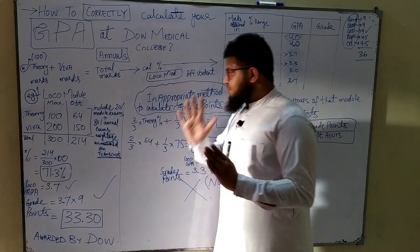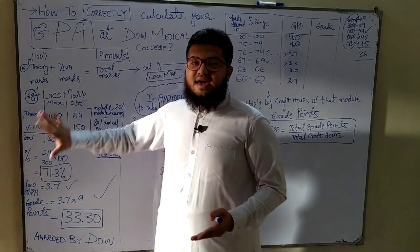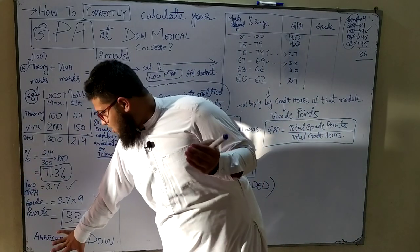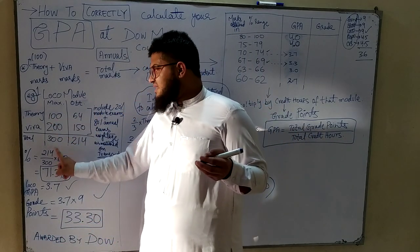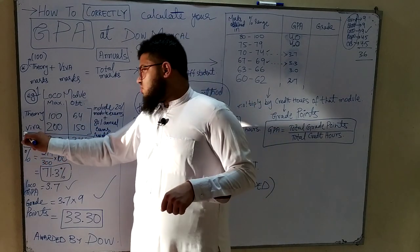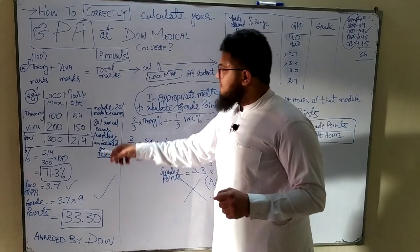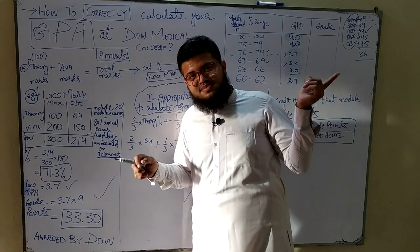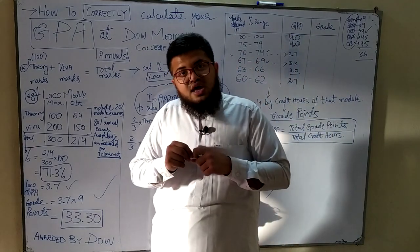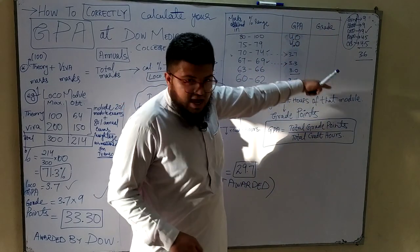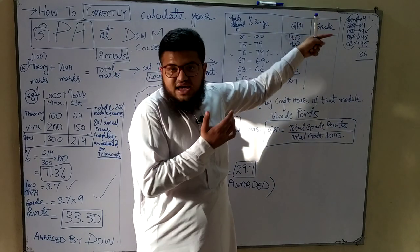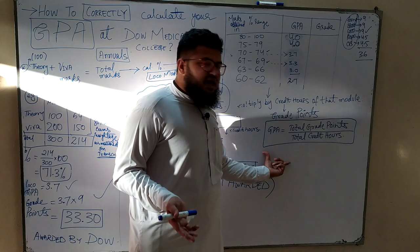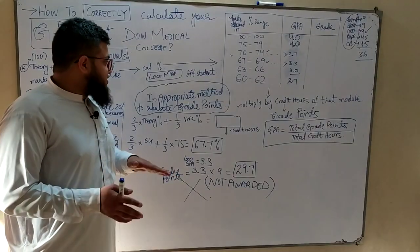This was just one example. Similarly, I tested another student's marks with this wrong method and again the answer did not match what DAO had awarded. Please, this is not the correct method — avoid it. The other method is better and is the correct one. DAO simply took the total maximum marks and total obtained marks, converted to a percentage, compared against the table, got the GPA, multiplied by credit hours to get grade points, and repeated this for all five modules.